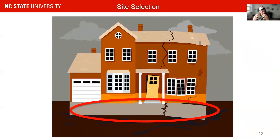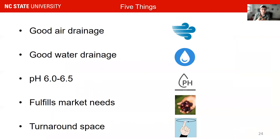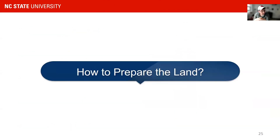Now we've learned a lot about site selection — the basic foundation of our vineyard. To summarize: you need good air drainage, especially important in North Carolina and Virginia; good water drainage, especially important in the Eastern Plains, South Carolina, and Georgia; soil pH between 6.0 and 6.5; a site that fulfills your market needs; and 30 to 40 feet of turnaround space on each side of your vineyard for machinery. Now let's talk about how to prepare the land.